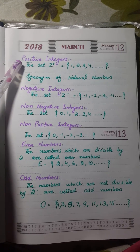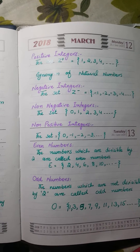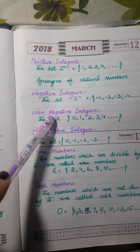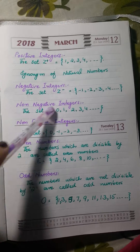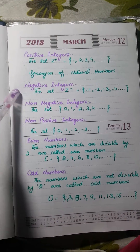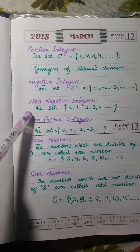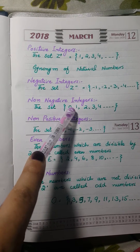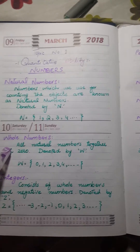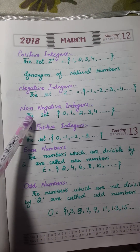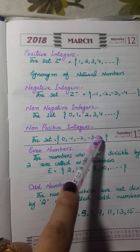Positive integers are 1, 2, 3, 4, 5, 6, 7 — they are synonyms of natural numbers. We can call natural numbers positive integers and vice versa. Similarly, negative integers are all the negative numbers: minus 1, minus 2, minus 3, minus 4. Non-negative integers are the positive whole numbers: 0, 1, 2, 3, 4 — we can call whole numbers non-negative integers. Similarly, non-positive integers include zero along with minus 1, minus 2, minus 3 and so on.